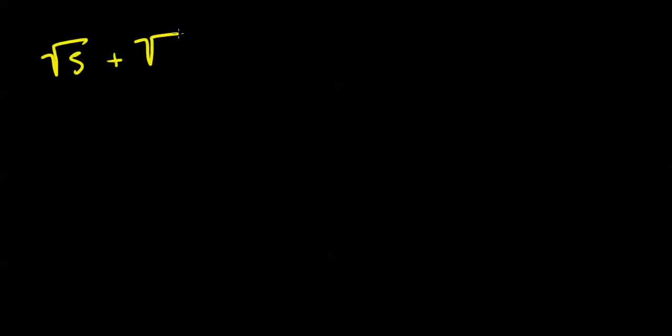In this section we're going to be adding and subtracting radical expressions. Let's look at the example 2 square root of 5 plus 4 square root of 5. In this example we can see that they both have a square root of 5, so they have like radicals.